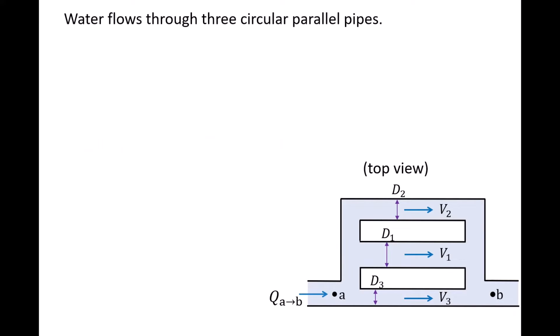Here we have a system where water is flowing through three circular pipes that are set up in parallel. The flow enters at point A, and then the flow is split into pipes 1, 2, and 3, and finally the flow exits at point B.